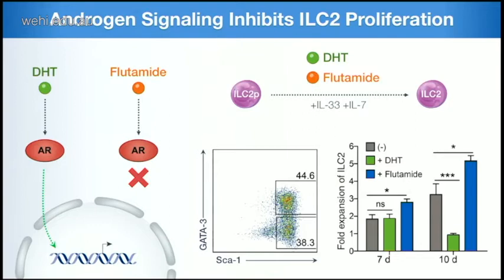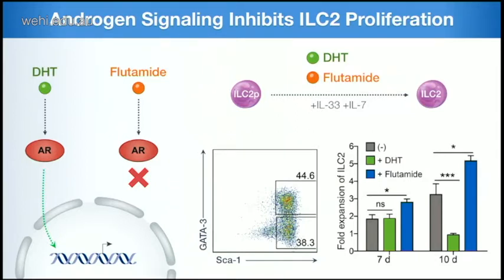You can activate the androgen receptor by adding DHT directly into culture, or block it with flutamide, an antagonist. We purified ILC2 progenitors from the bone marrow and let them grow and differentiate into mature ILC2 for almost 10 days, cultivated either with DHT or flutamide. Cells cultivated with DHT were almost unable to proliferate — a massive reduction compared to control. Interestingly, if you block the androgen receptor with flutamide, the cells massively proliferate. This proves that activation of the androgen receptor is important for inhibiting ILC2 proliferation.